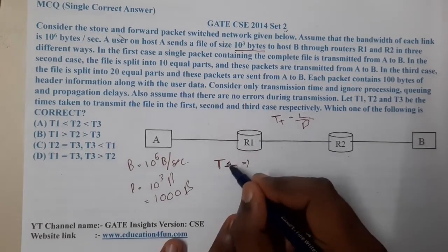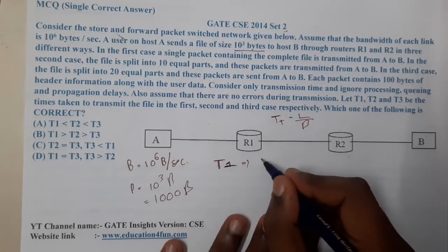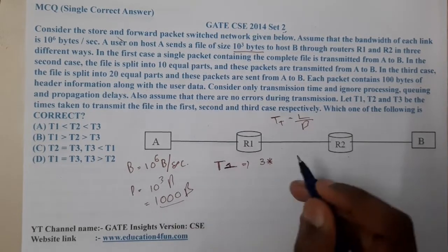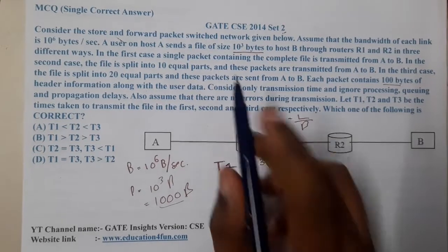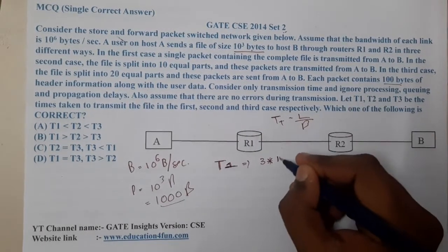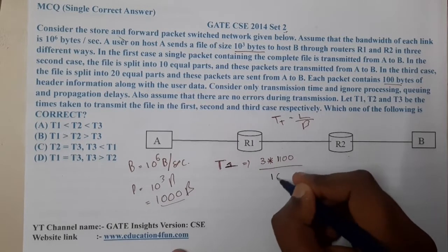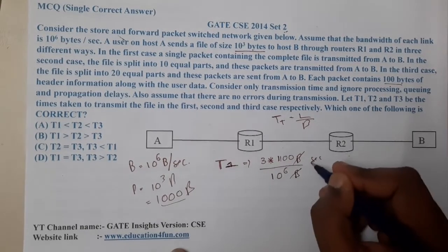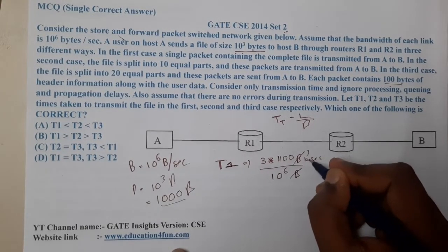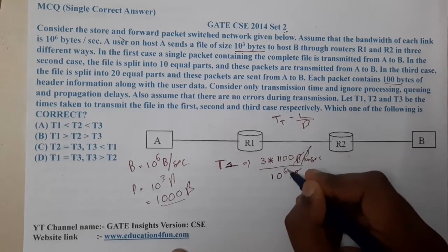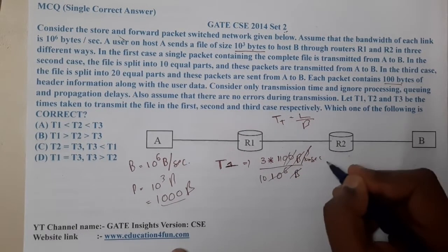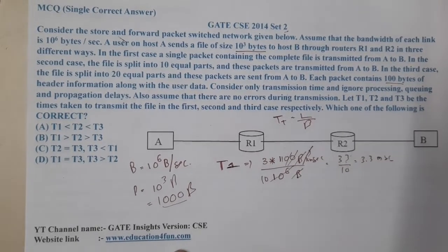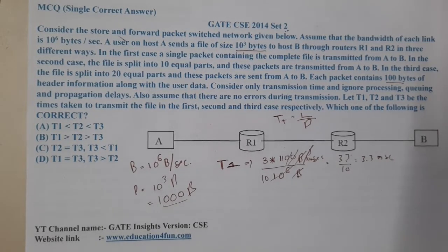For T1: the packet size is 1000 bytes and the header is 100 bytes, so total is 1100 bytes for one packet. T1 = 3 × (1100 / 10^6) bytes per second. Converting to milliseconds: 3 × (1100 × 10^3 / 10^6) = 3300 / 10^3 = 33 / 10 = 3.3 milliseconds.